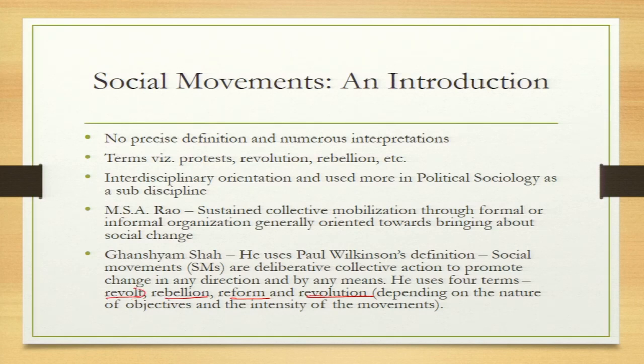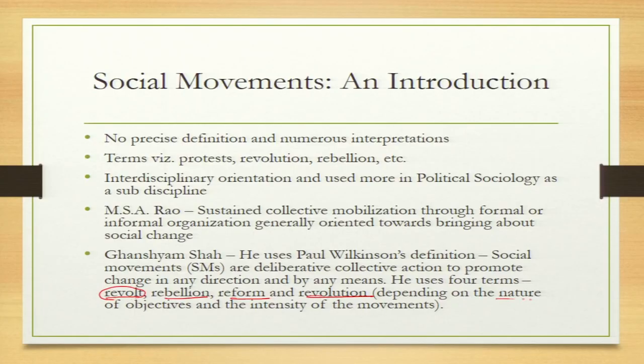For example, 1857 in India — what we call the Sepoy Mutiny — is considered a revolt. Then there are movements called rebellions, involving an outbreak of some momentous kind of change. Reform is quite gradual, slow and steady — for example, the works done by Raja Ram Mohan Roy or Jyotiba Phule, who led social reforms. Revolution is a term used more in the Marxist context and carries a notion of the use of violence. Depending on the nature of objectives and the intensity of the movement, they vary in their spread — sometimes called revolt, reform, or revolution.